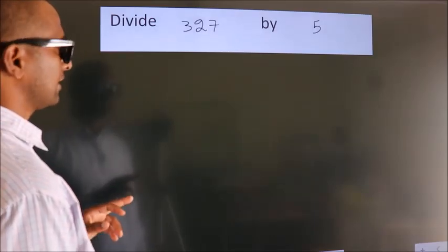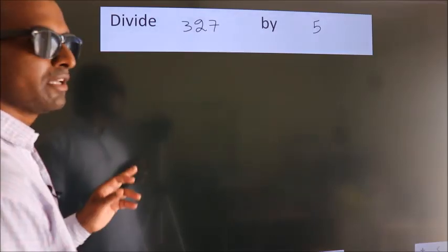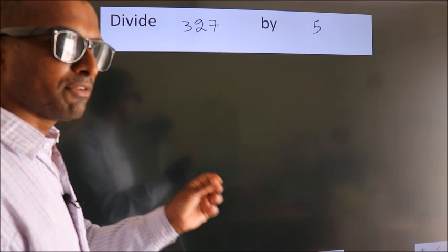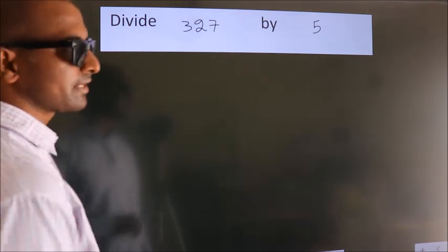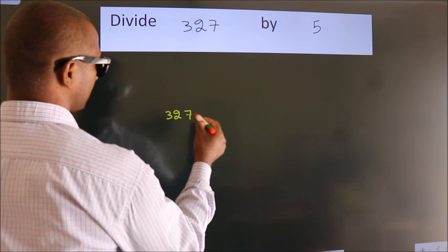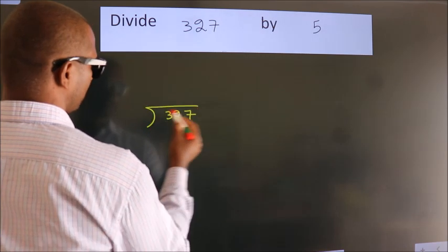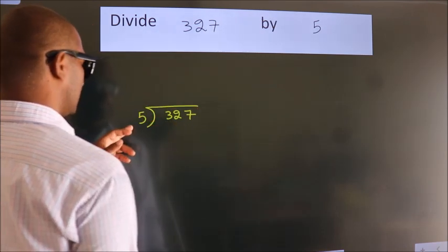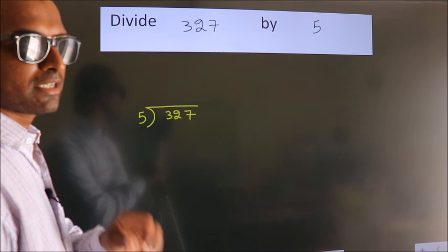Divide 327 by 5. To do this division, we should frame it in this way. 327 here, 5 here. This is your step 1.